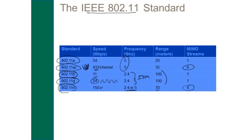Many access points running at 2.4 gigahertz combine B and G together, meaning they can work with either on the access point. Some even combine B, G, and N. The problem — and it's not as well known as it should be — is that if someone shows up with an old 802.11b radio card, all other users on your network will slow down to that B speed, because the access point doesn't like to switch transmission methods. So be careful that legacy machines aren't slowing down your network.